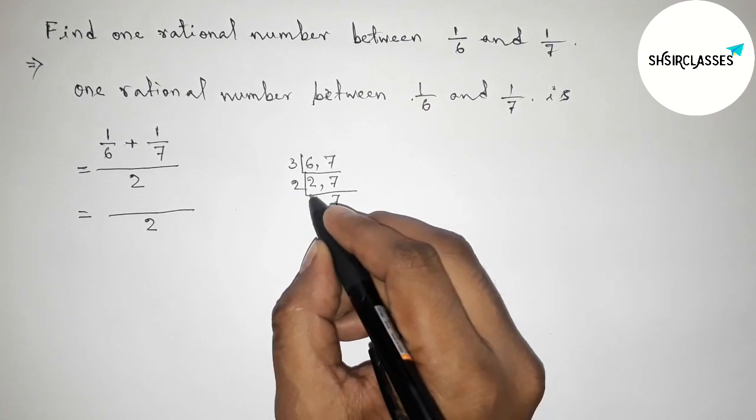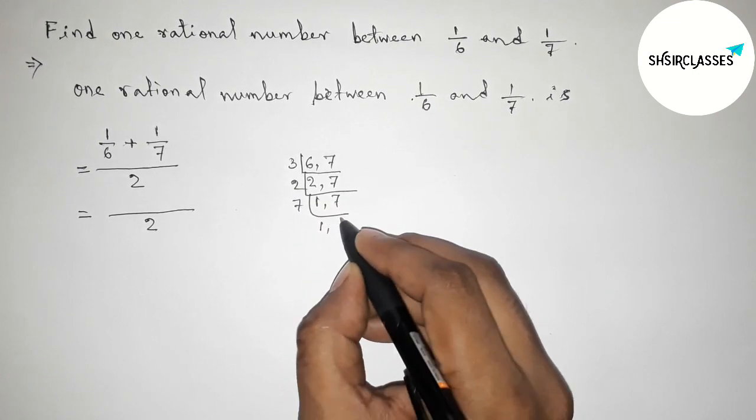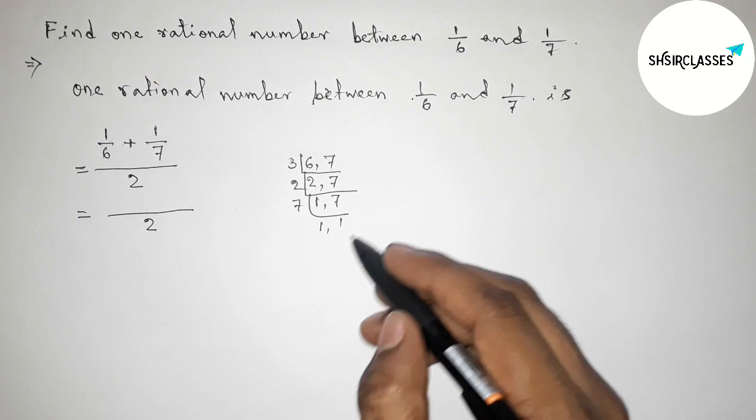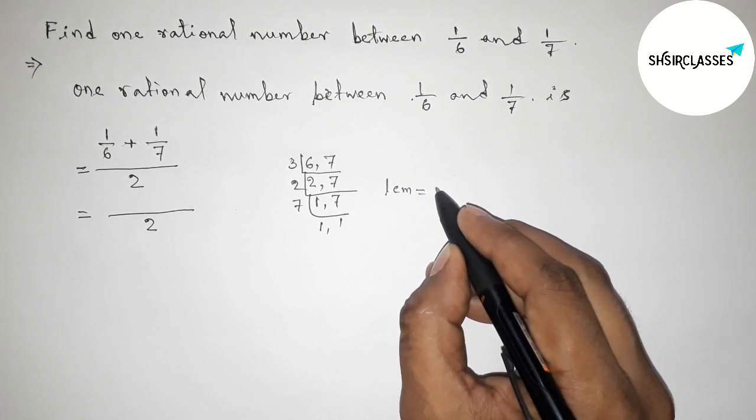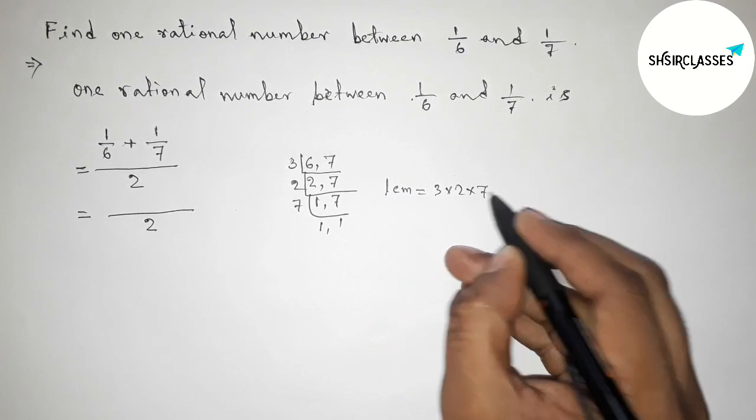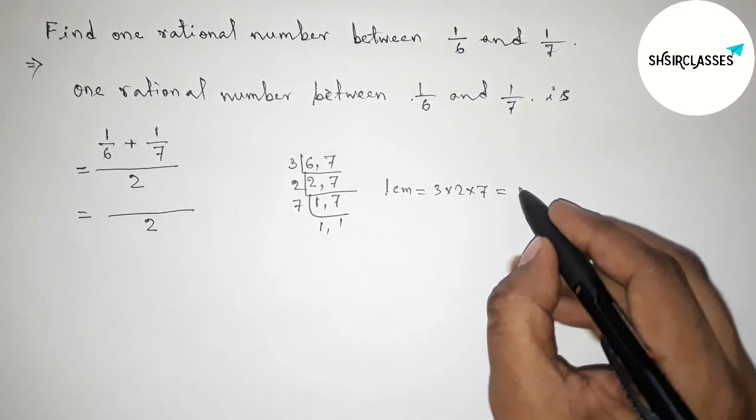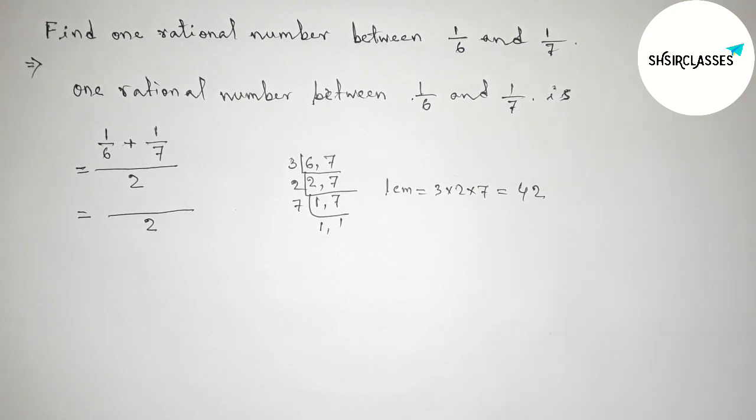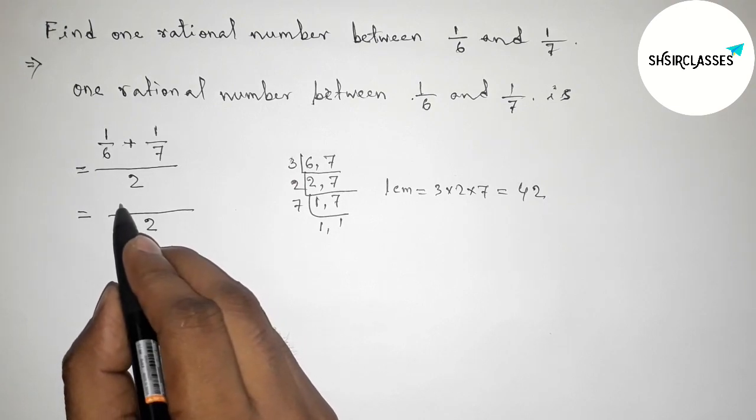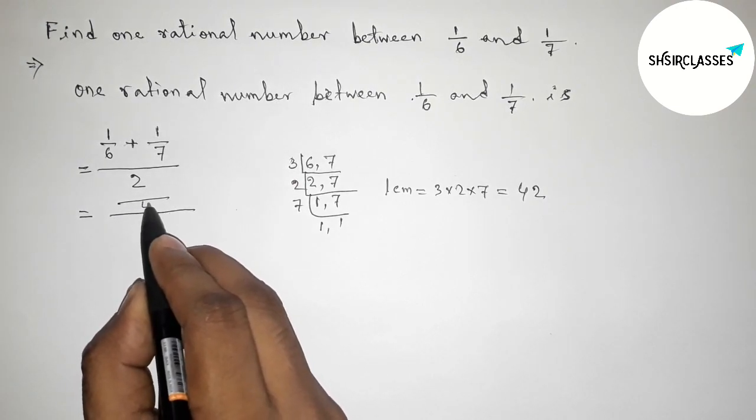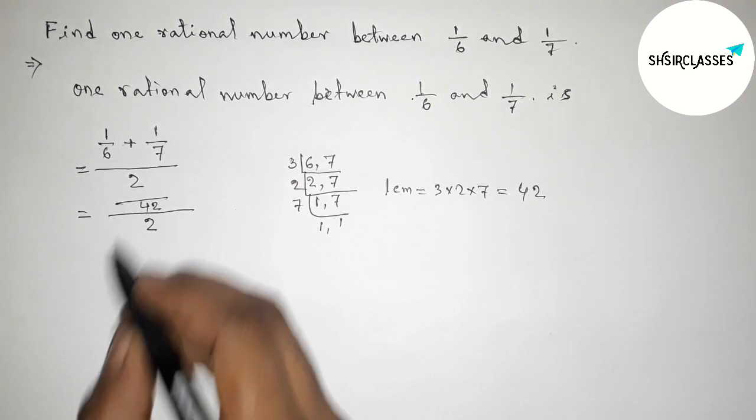So here 2, 3, and 7 are the divisors or factors of 6 and 7. Okay, so LCM equals to 2 into 3 into 7, so that is 42. Okay, so now first write down here 42, and now first dividing...